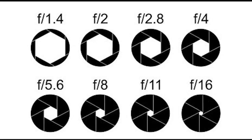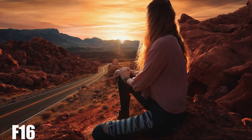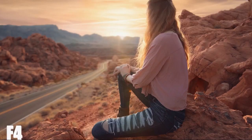The lower the aperture number, the more light is let into the camera, but the higher the aperture number, the less light that comes in. To best understand this, take a look at these two pictures. The picture with the higher aperture number has less light in it, whereas the picture with the lower aperture number has more light in it.